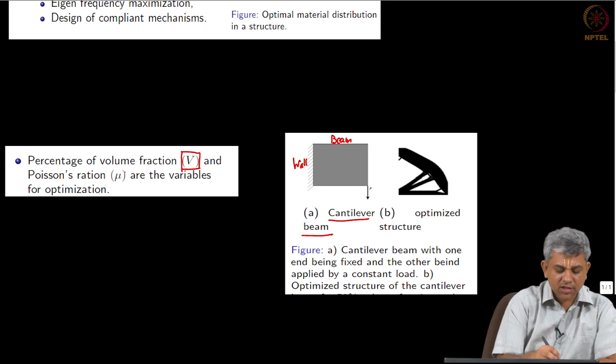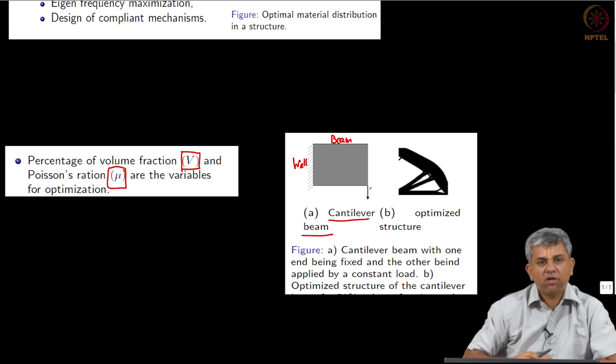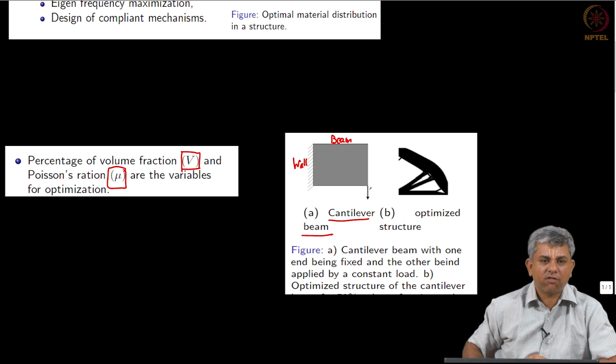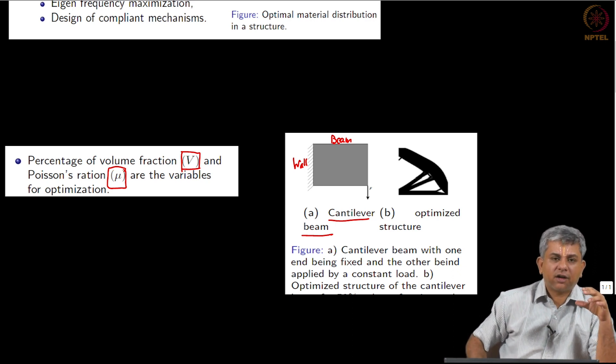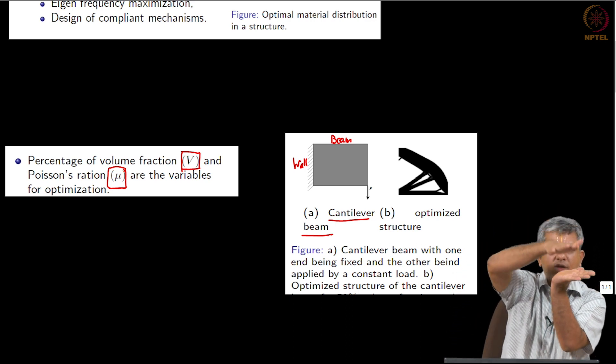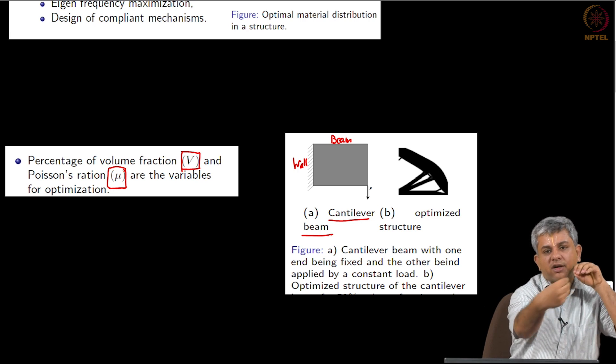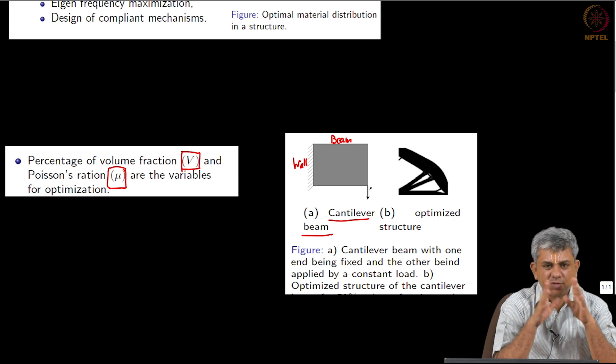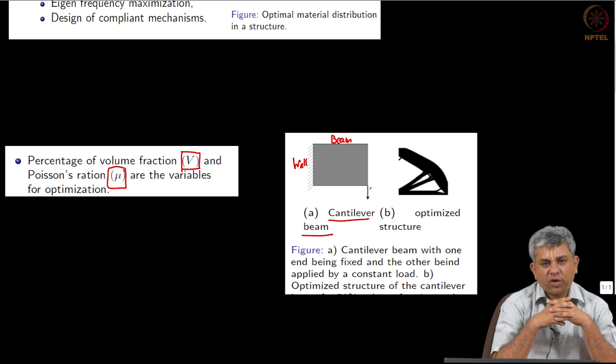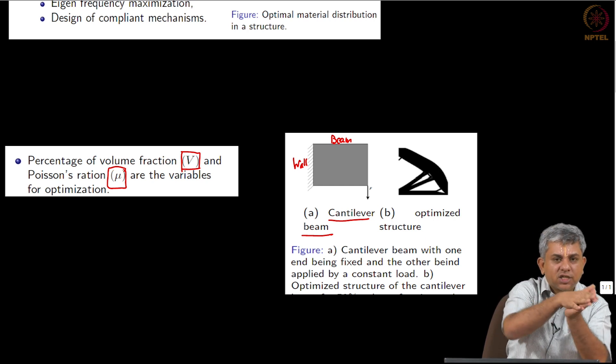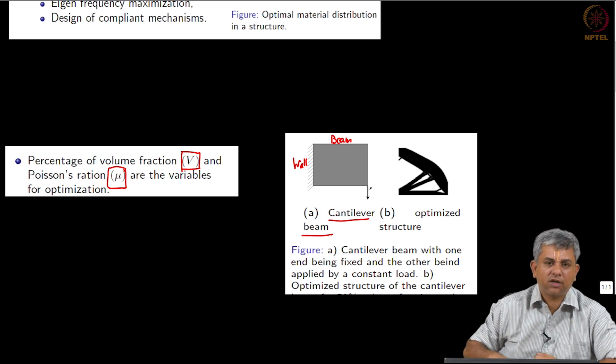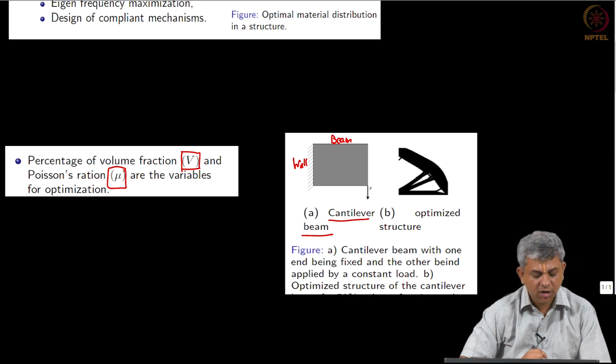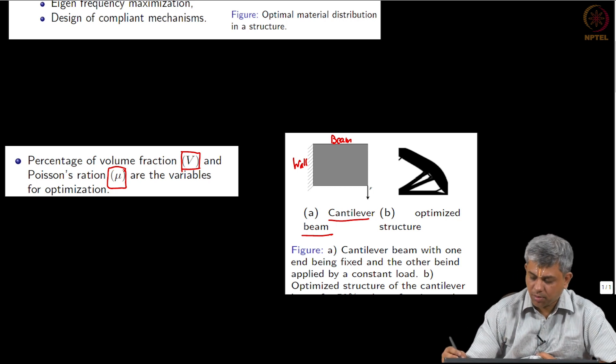Another variable here is something called Poisson's ratio. Poisson's ratio is, I will describe it very simply, in that if I squeeze something in one direction, you know that it will move in the other direction also. So the amount that it moves in the other direction, in some sense very vaguely, is Poisson's ratio. It will not just come out, it will actually move in other directions also. So strain in one direction versus strain in the other direction is Poisson's ratio.